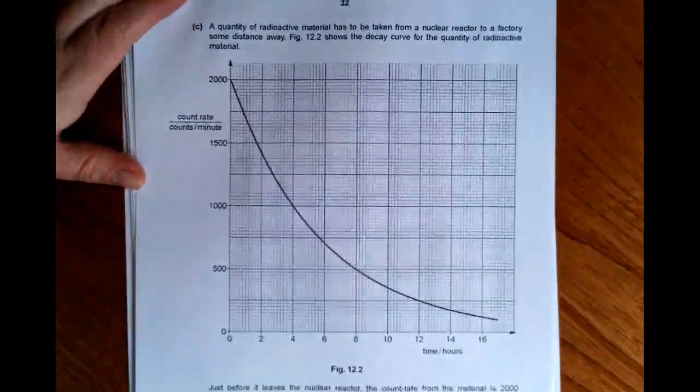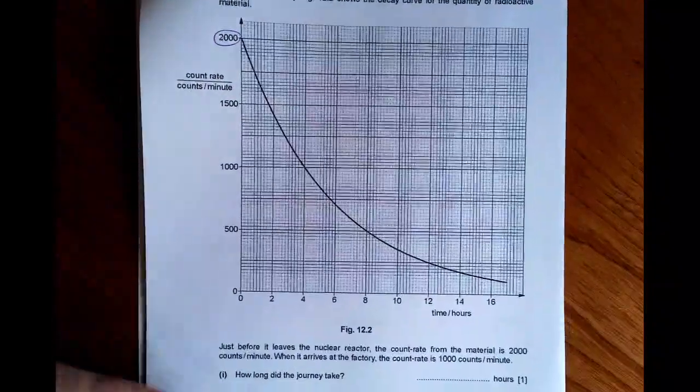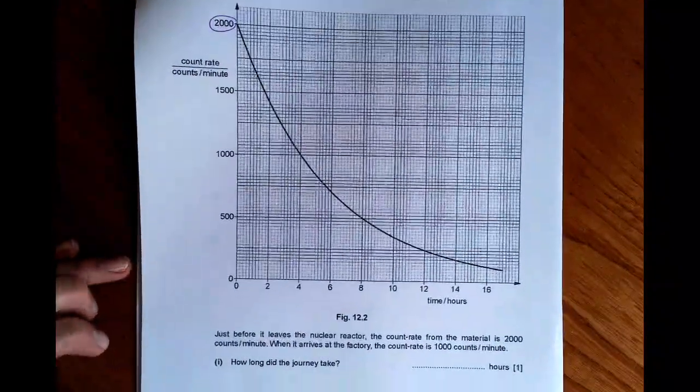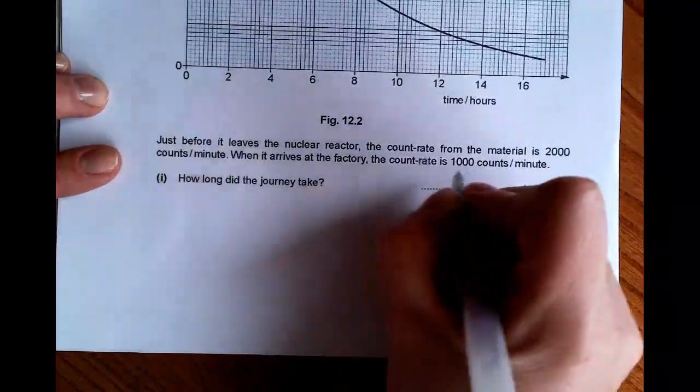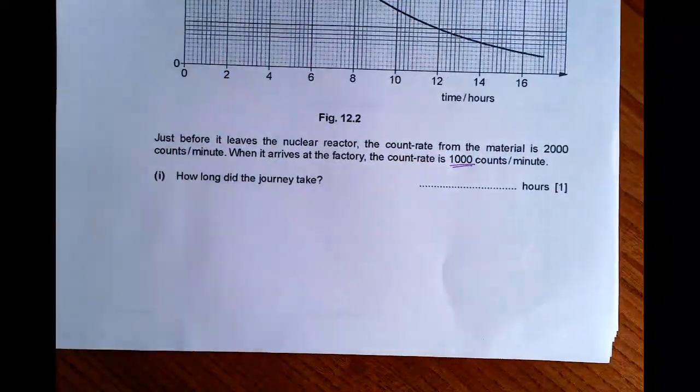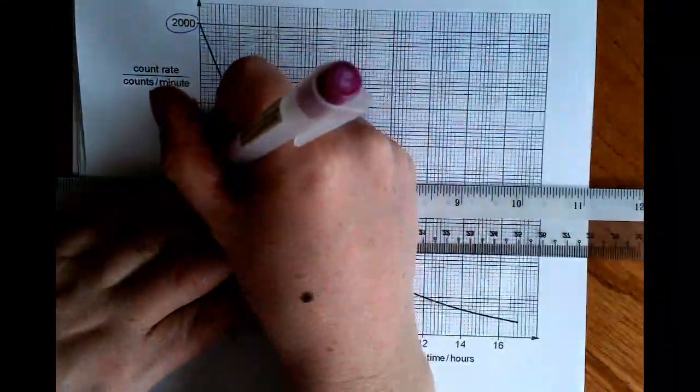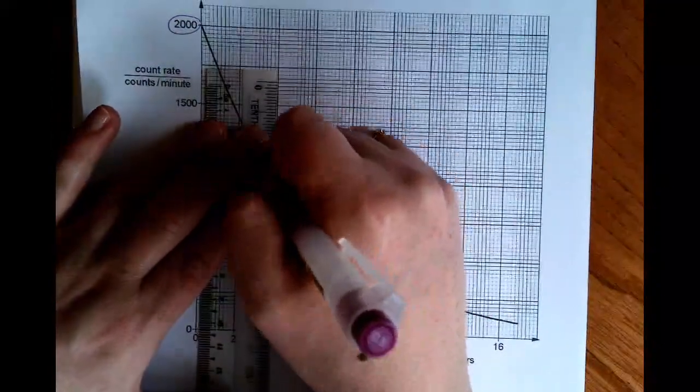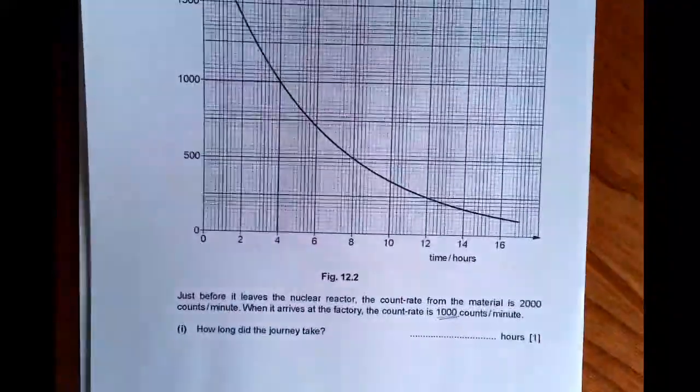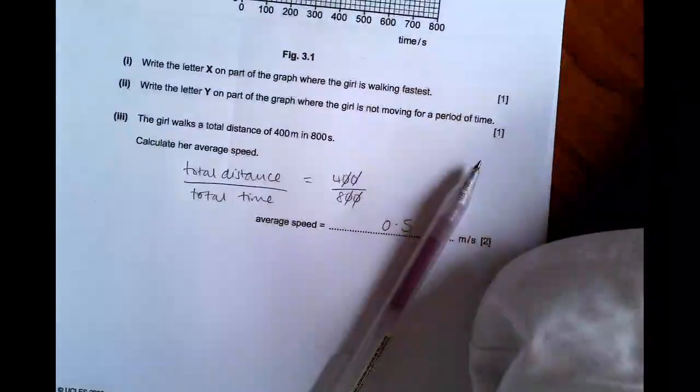And then in C, you've got a curve of count rate. So, you can see that initially, the count rate was 2,000 counts per minute. Then it says that we take that sample and it arrives at the factory recording 1,000 counts per minute. And you have to work out how long that journey took. So, all you have to do is find 1,000 counts and then track to see that time. And you can see that clearly says 4 hours. So, you just write 4 hours there. I think that's it.